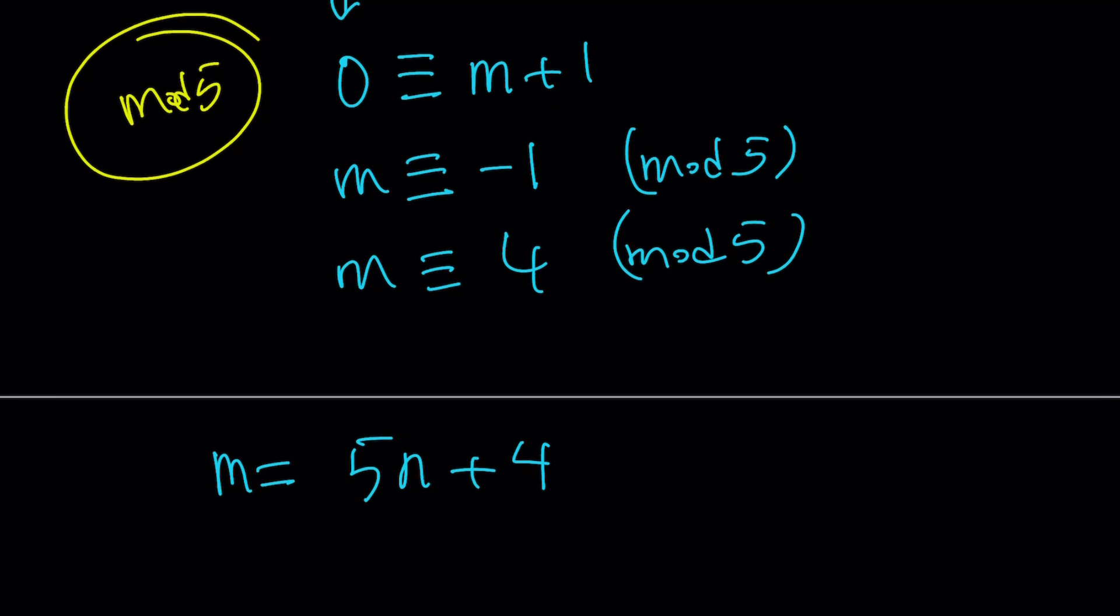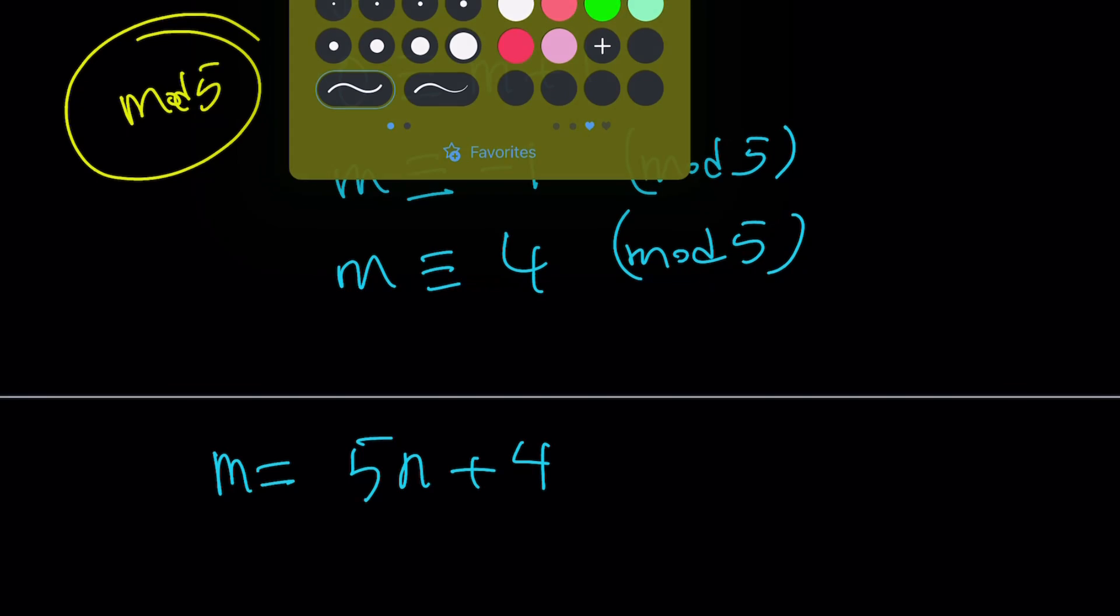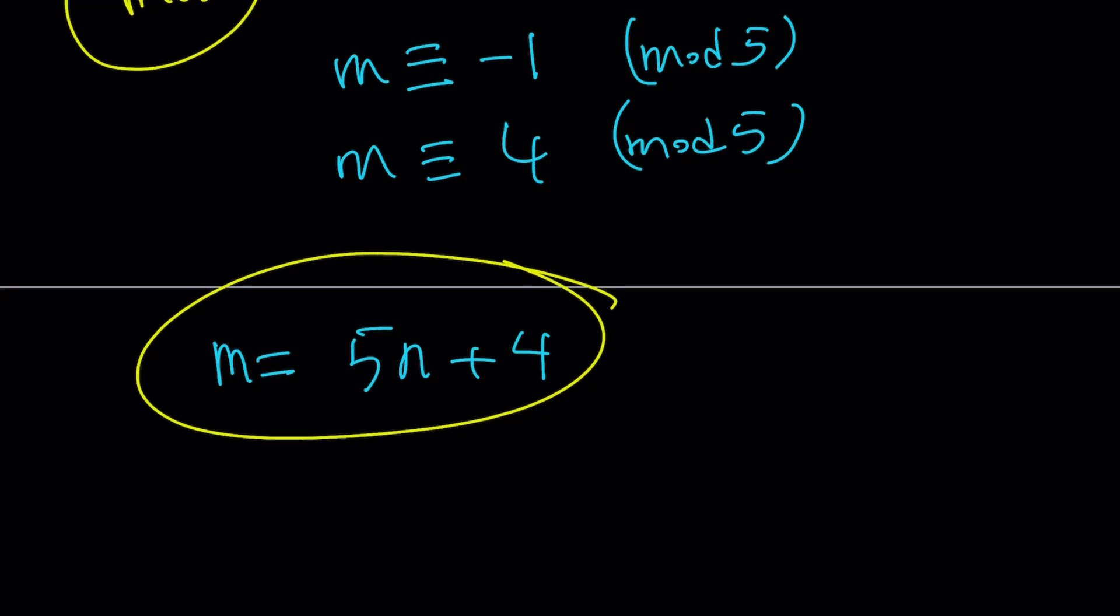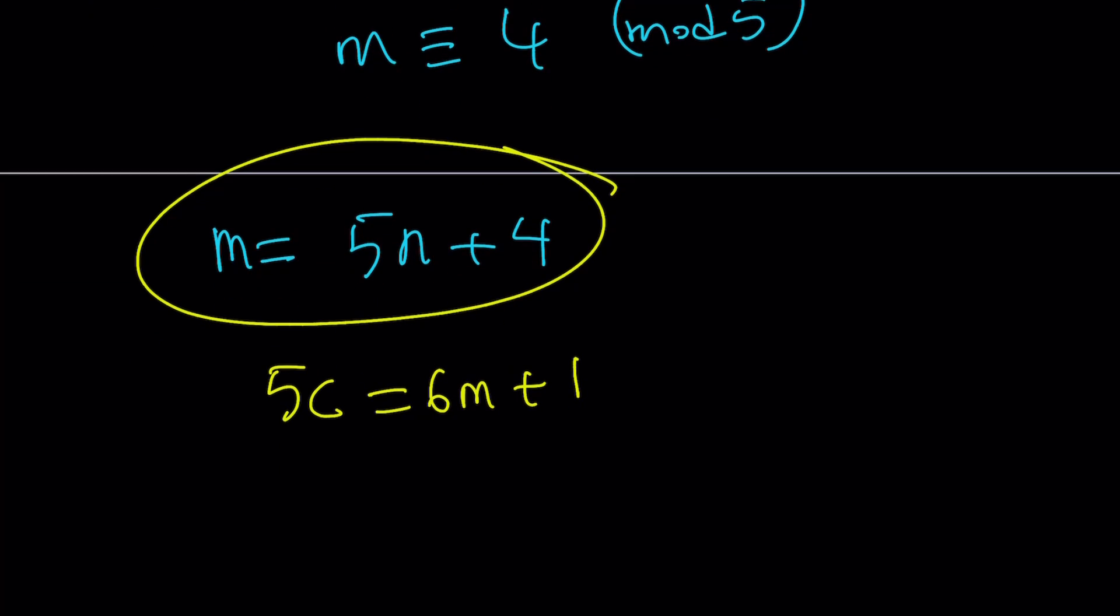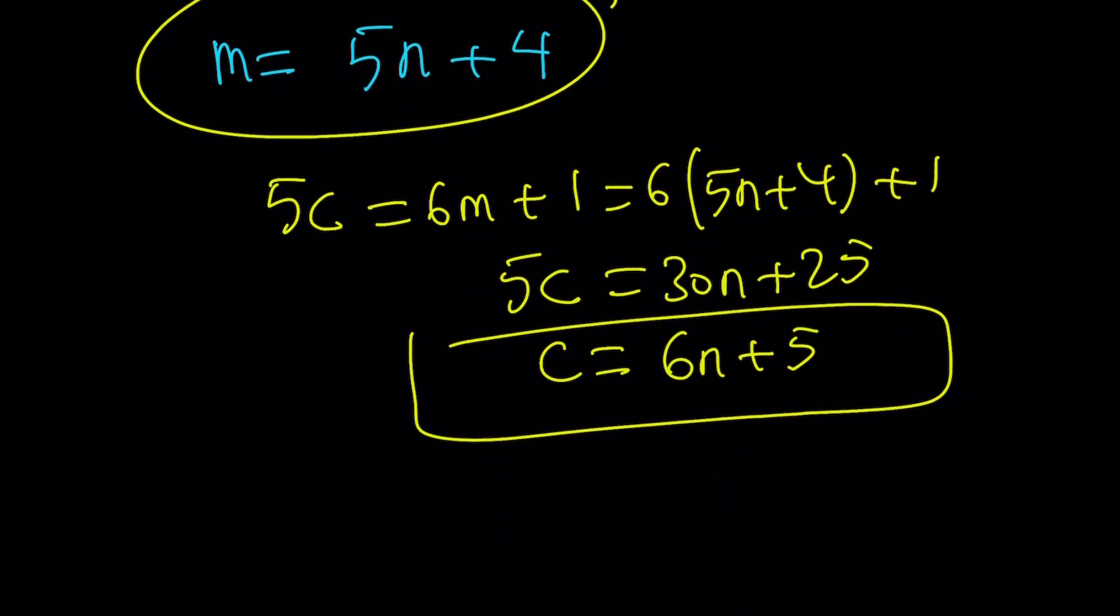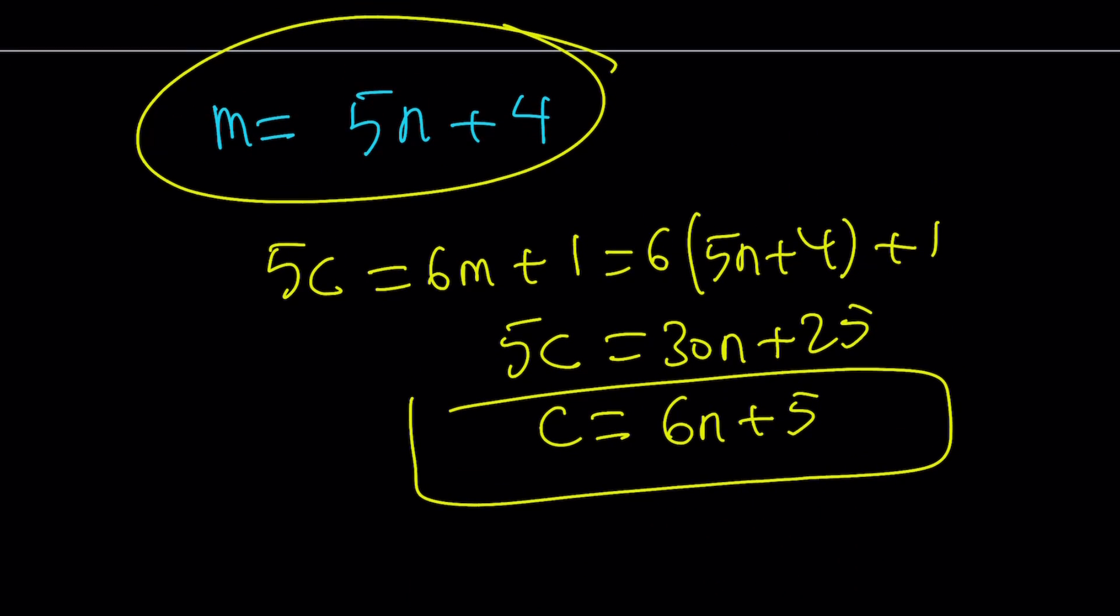So once you're able to write m like that, it's really cool because you can use this to find the other ones. How? Let's go ahead and see how that works. We have 5c equals 6m plus 1, and m is equal to 5n plus 4. Let's go ahead and plug it in. 6 times 5n plus 4 plus 1. This is going to be 30n plus 24 plus 1, which is 25. But this is 5c. So if you divide everything by 5, you get c equals 6n plus 5. So that's going to be the c value in terms of n. We have m in terms of n, but we also want to find a and b in terms of n. Right?